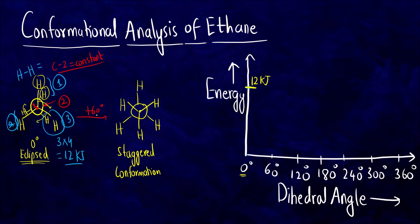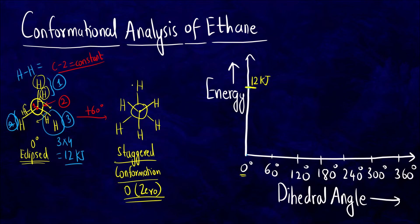For 60 degrees — the staggered conformation — the strain energy is 0 kJ/mol. There is no strain energy when the hydrogens are in the staggered arrangement. So we plot a point at 0 kJ for 60 degrees.